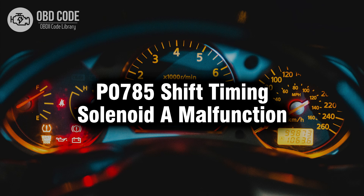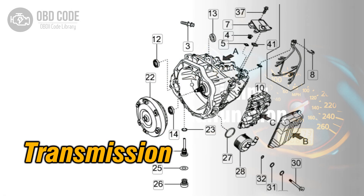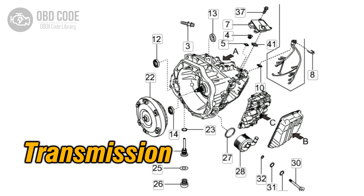Welcome. In this video we will talk about code P0785, its symptoms, causes and possible solutions. The P0785 trouble code indicates a malfunction specifically related to shift timing solenoid A in the transmission.